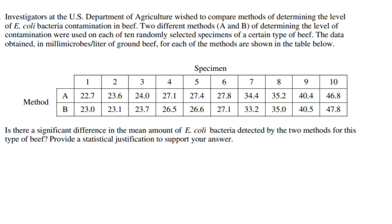Hi. Today we're going to look at the 2007 AP Statistics Exam, problem 4 from the free response section. It describes investigators at the Department of Agriculture who wish to compare methods of determining E. coli levels in contamination in beef. There are two different methods available for testing the beef for contamination, methods A and B. Both methods were applied to each of 10 randomly selected specimens. I think it's important to always start these problems by looking at the data you're given and just making sure you understand what the data is measuring.